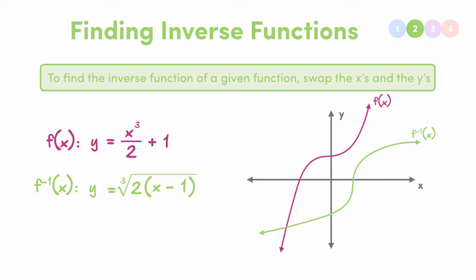So if our original function was x cubed over 2 plus 1, then our inverse function is the cube root of 2 outside of x minus 1. That's all there is to it.